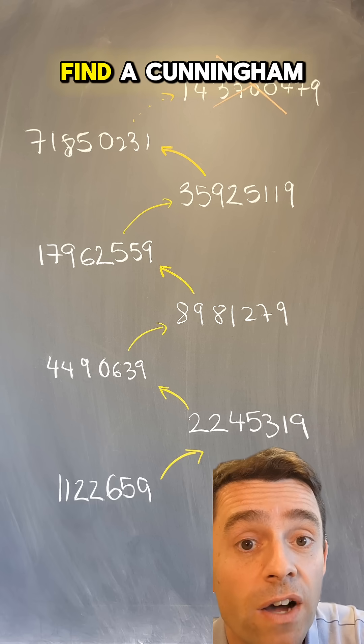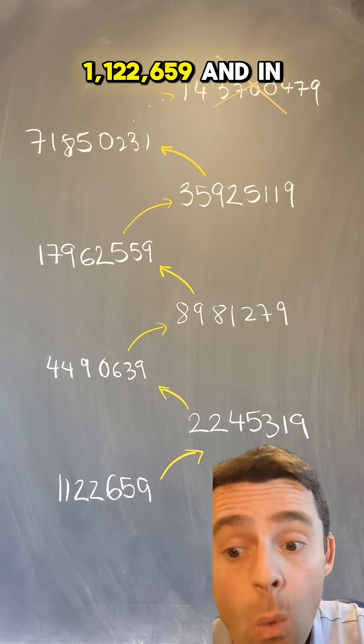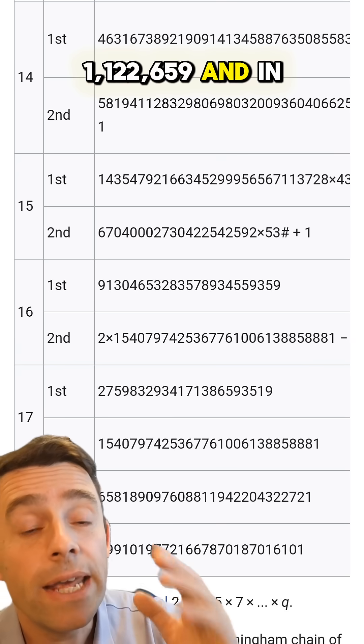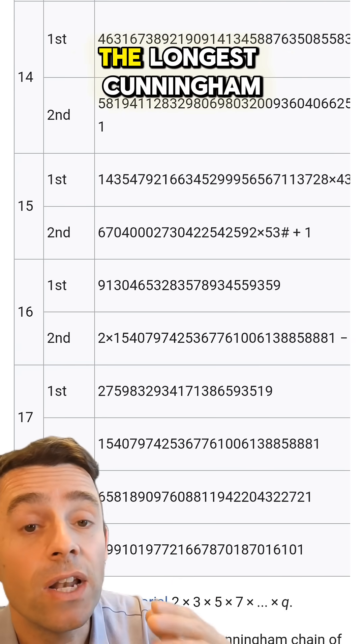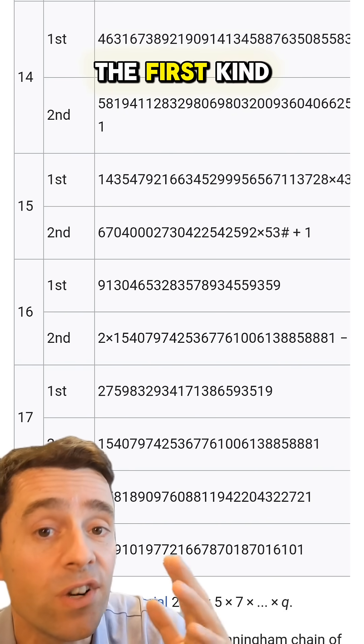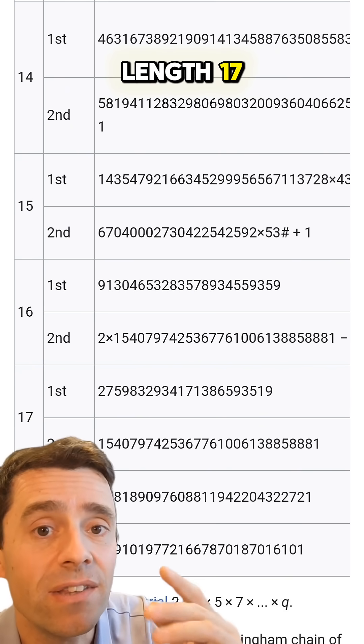For example, the first time you find a Cunningham chain of length 7, it starts with 1,122,659. And in the Wikipedia page, you can see the longest Cunningham chains. In this case, we're talking about Cunningham chains of the first kind.